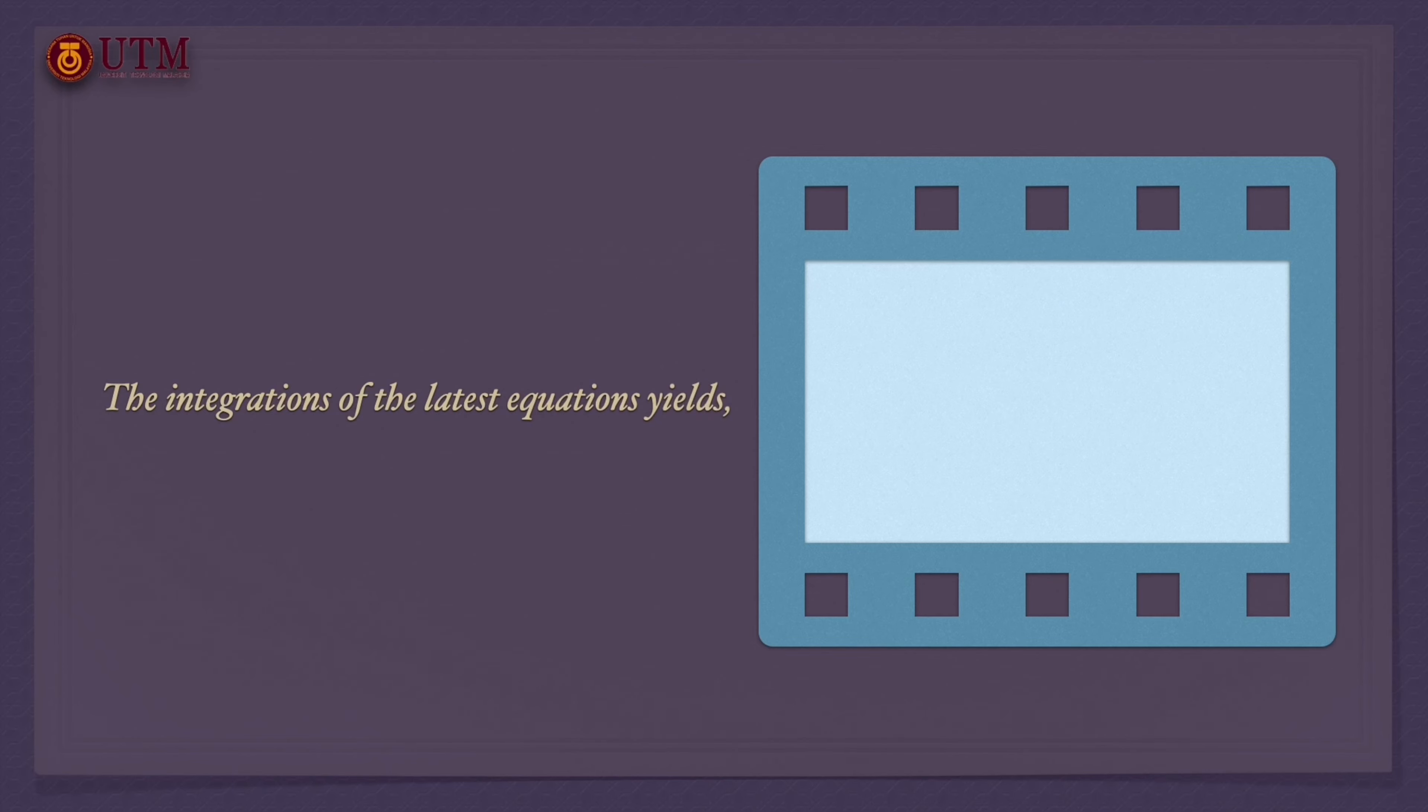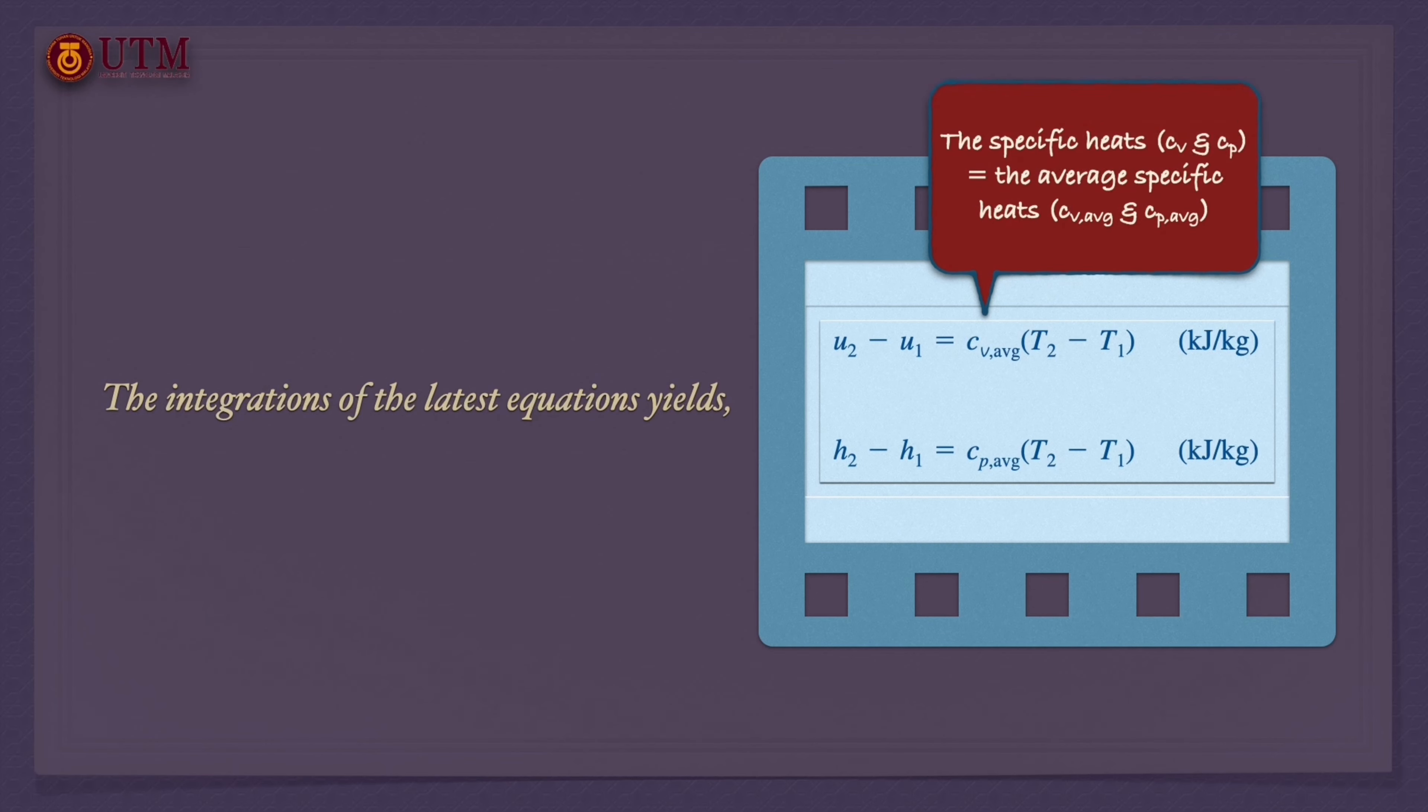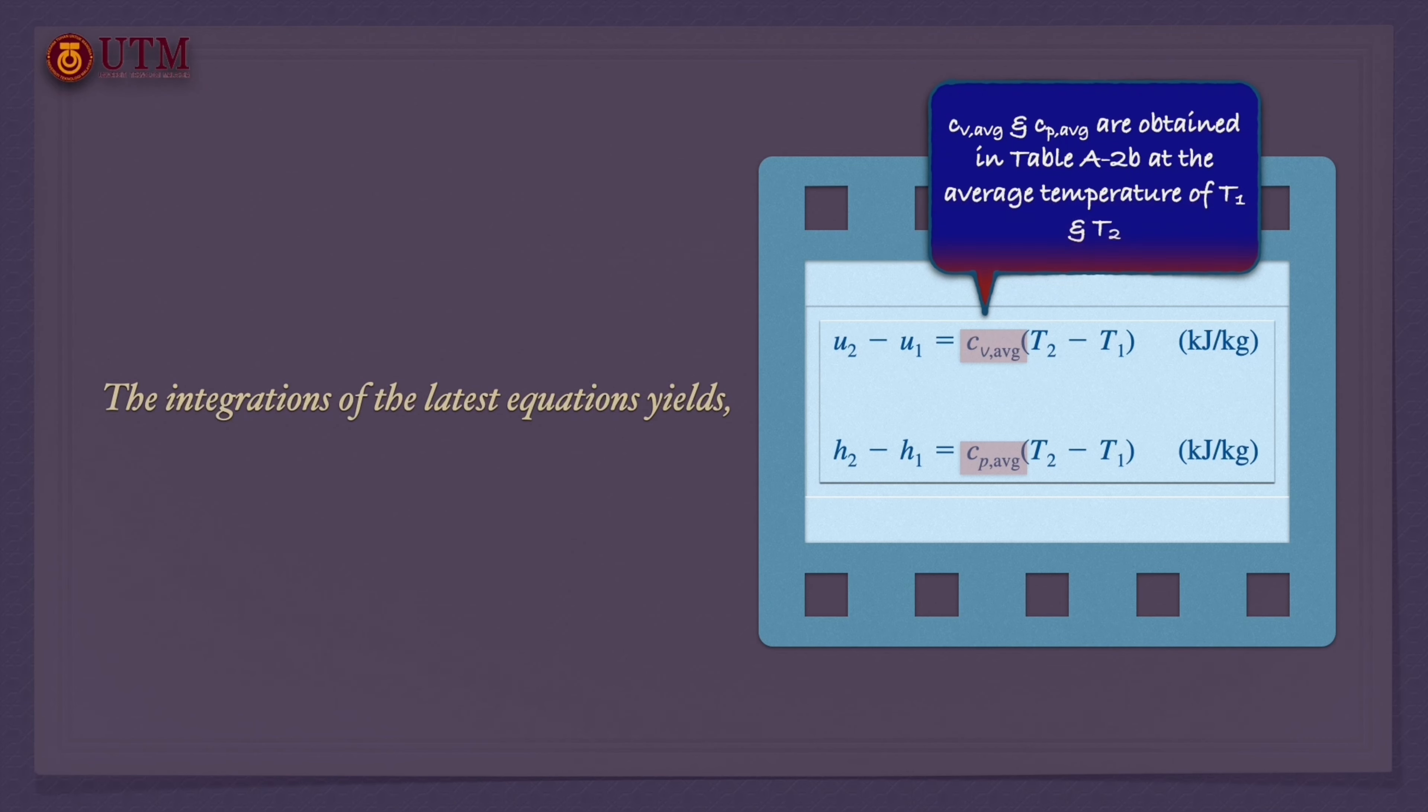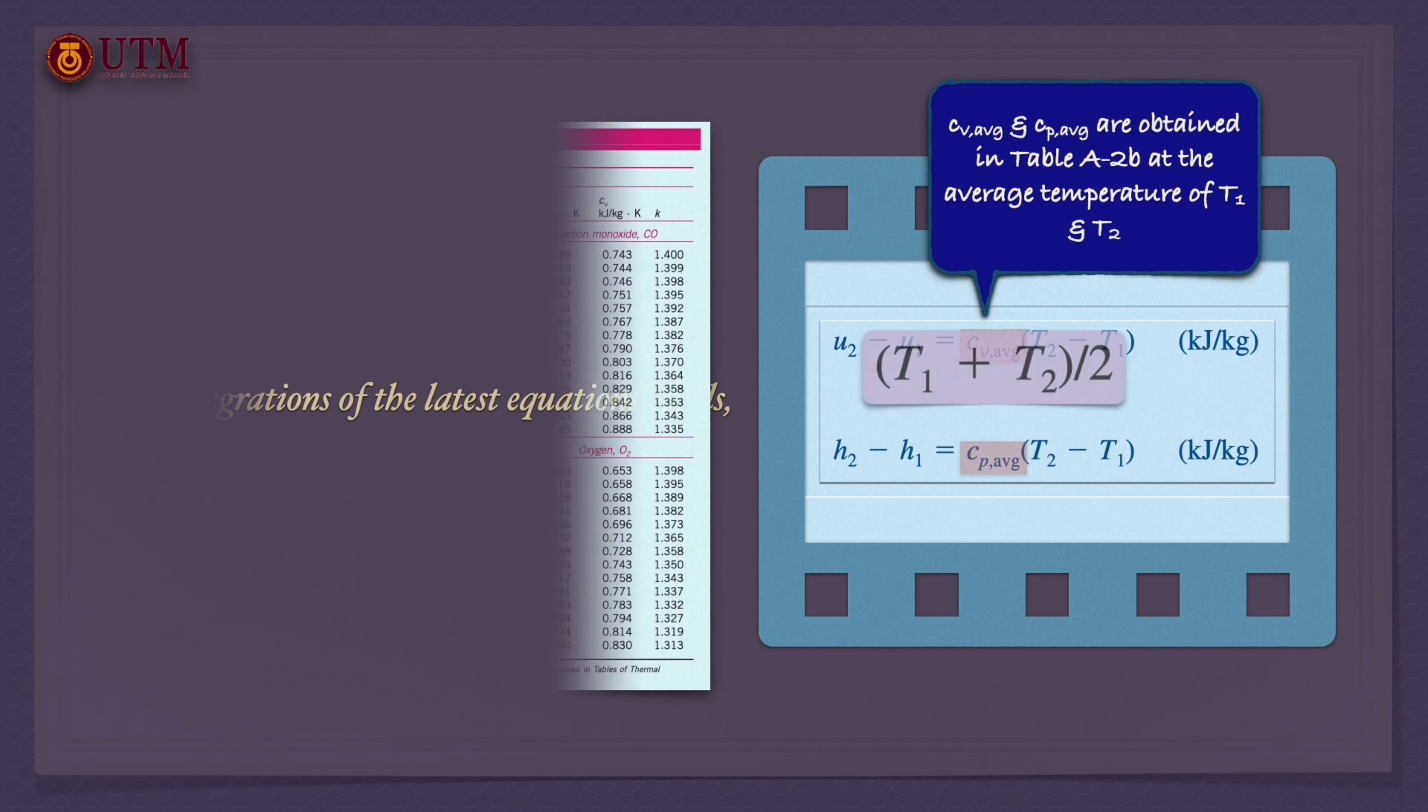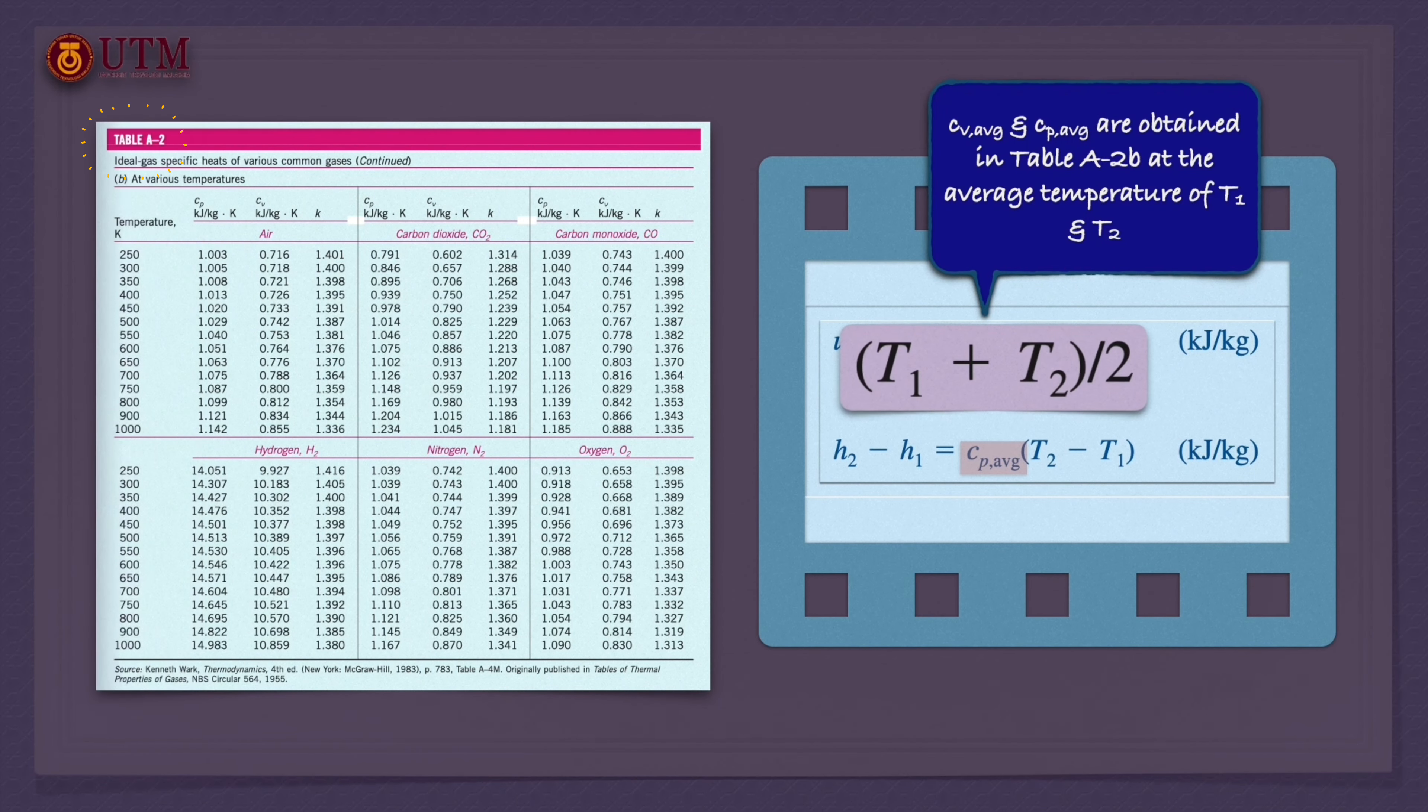Then, the integrations in these equations can be performed, yielding the given forms. The constant average specific heat values can replace specific heat functions. The average specific heats, Cp and Cv, are evaluated from table A-2B at the average temperature of T1 and T2.